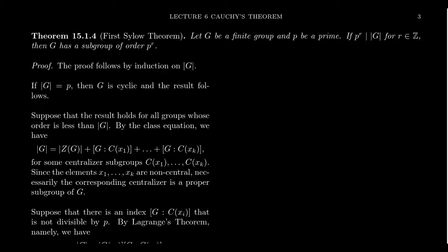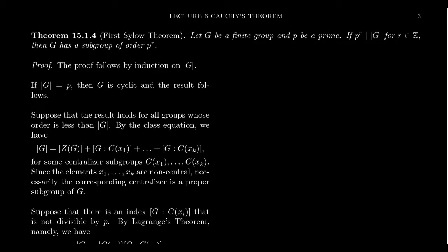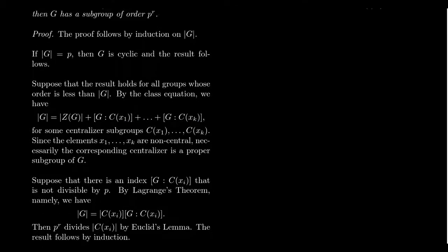The elements x1, x2, all the way up to xk are representatives of the k non-trivial conjugacy classes. In particular, these are elements which are non-central. Therefore, their centralizers will be proper subgroups, because there's at least something that doesn't commute with them — not everything commutes with them. That proper statement will be important when we get to induction.